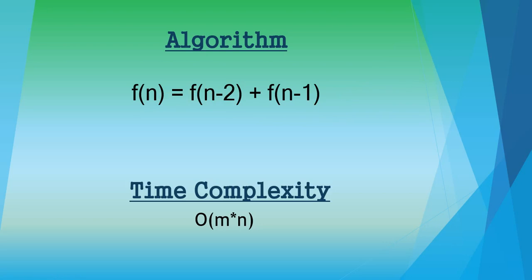The time complexity of this dynamic programming solution of the staircase problem is O(M × N), where N is the nth step we need to reach — the number of ways to reach that nth stair — and M is the number of options given to us. In our case it is two, because we have two options: one and two.